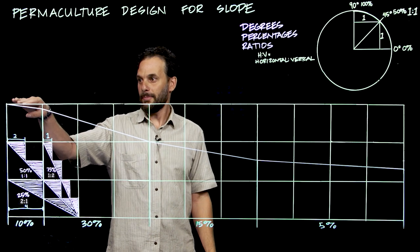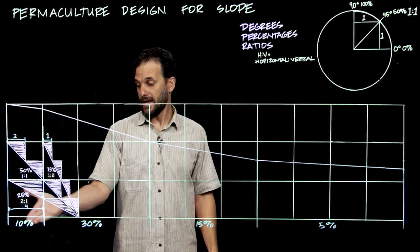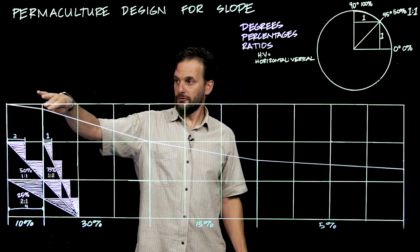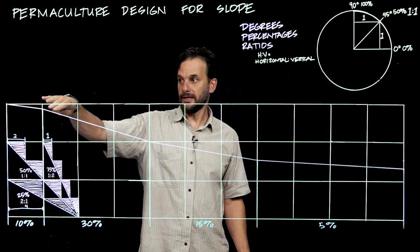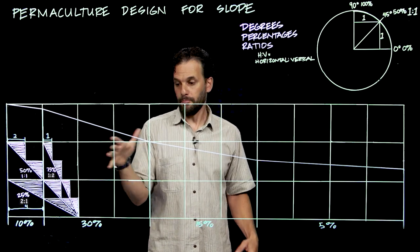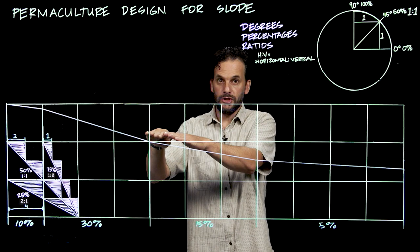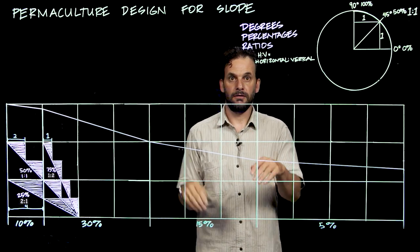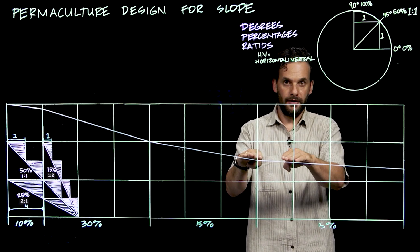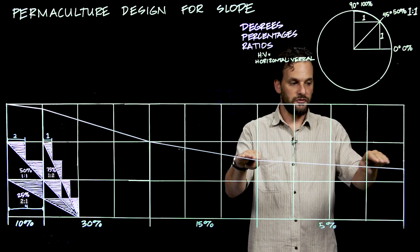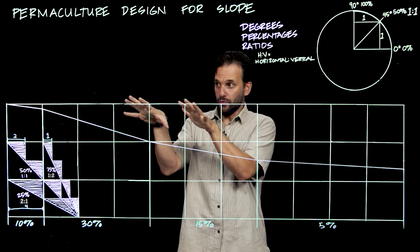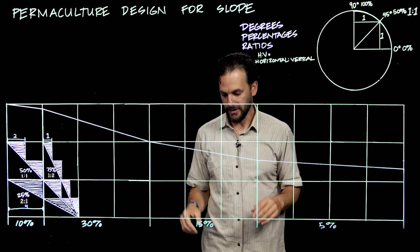So at the top of the hill here, we have a gentle slope that is a 10% slope right here. Then as we go down from the top of the hill, we have a steeper 30% gradient. This then breaks right here into a gentle 15% gradient, which then hits basically the slope at the bottom of the valley, which flattens out to 5%. So I'll add some irregularity now to make it a little bit more realistic.